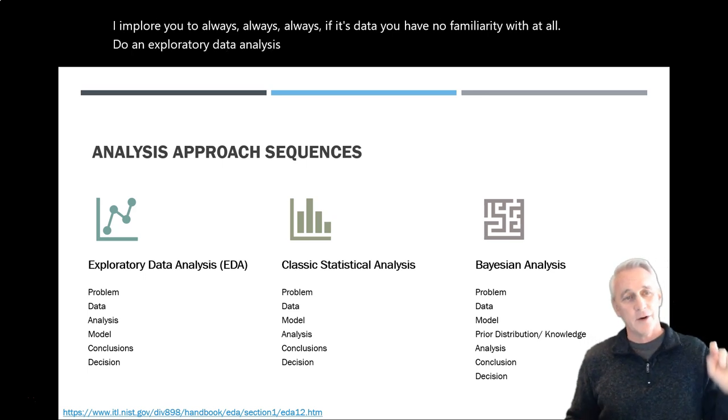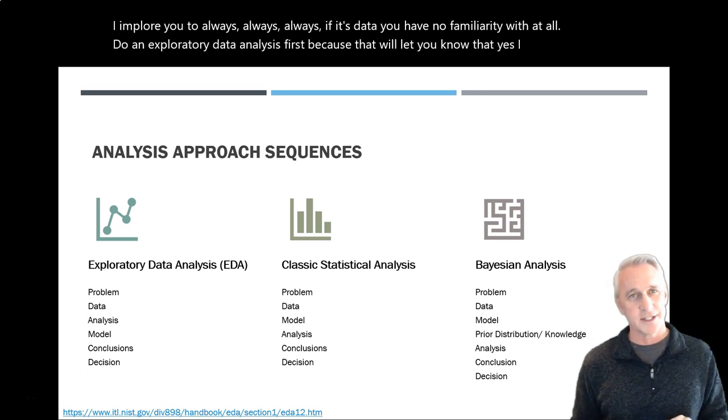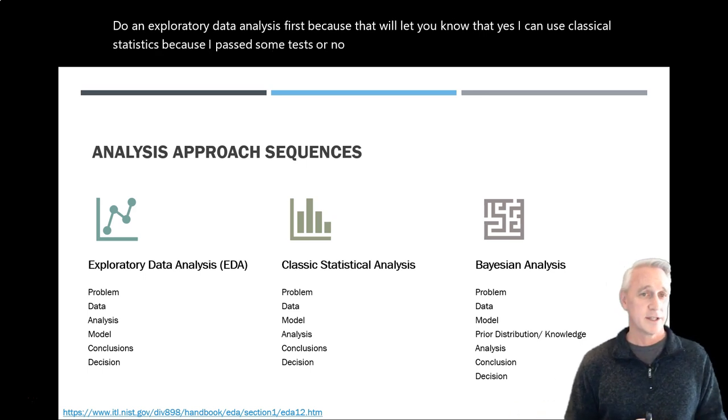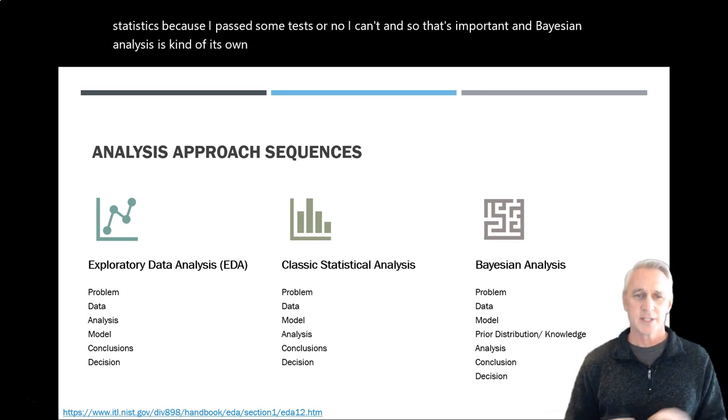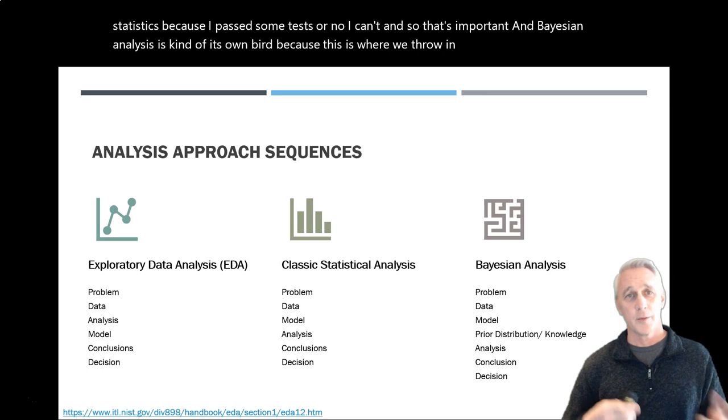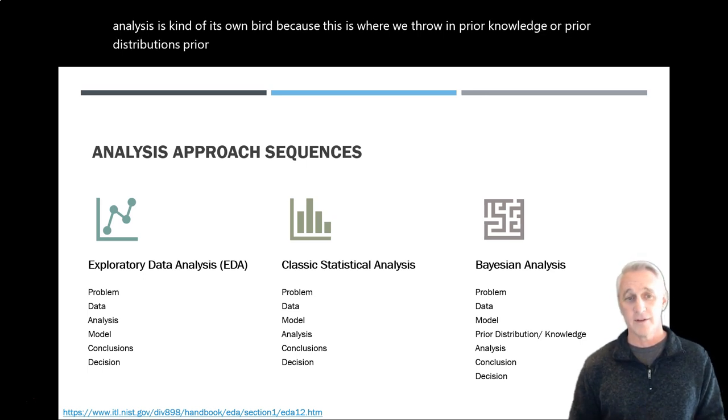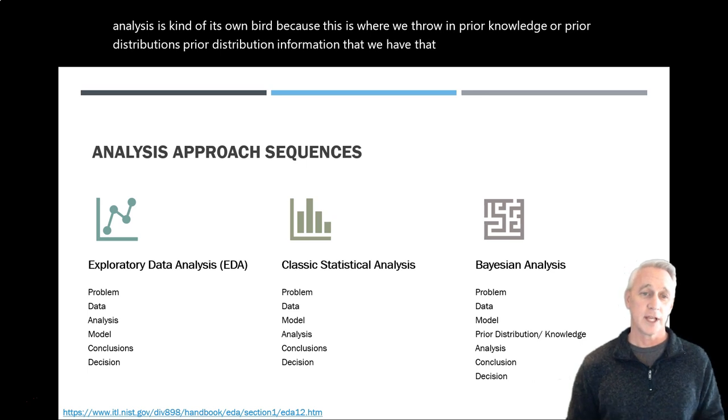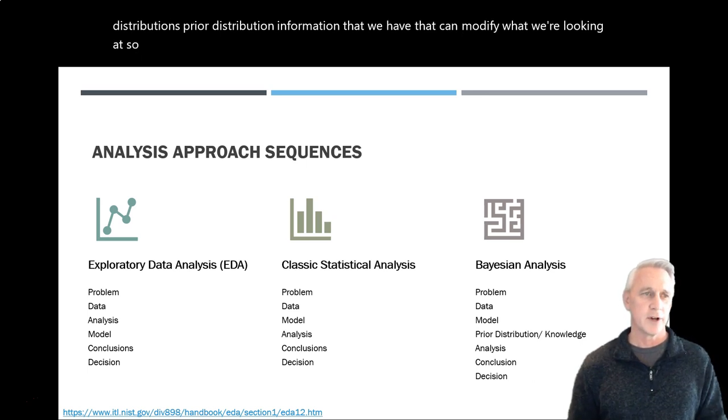Now, if you notice here, we're actually looking at a little bit of the differences in sequences of what happens in these methodologies. Now, this is actually pulled from the National Institute of Standards website. So I've got the link down there if you really want to take a deep dive into this as to where this comes from. But they really have a little bit different order in which they're looking at what they want and what's coming out of the data. So all of them start with a problem. Obviously, we wouldn't be even collecting data if we didn't have a problem that we wanted to learn something about.